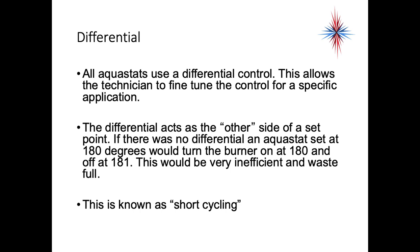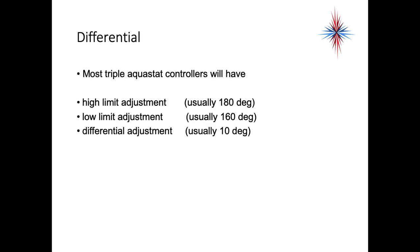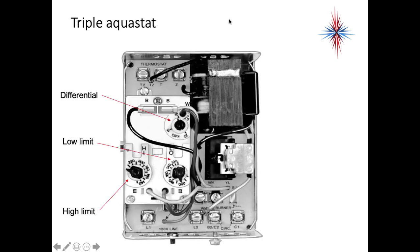All aquastats use a differential control, which allows the technician to fine-tune the control for a specific application. The differential acts as the other side of a setpoint. If there were no differential, an aquastat set at 180 degrees would turn the burner on at 180 and off at 181 — very inefficient and wasteful of fuel, known as short cycling. Most triple aquastat controllers have a high limit adjustment at 180 degrees, a low limit adjustment at 160 degrees, and a differential adjustment, usually 10 degrees.